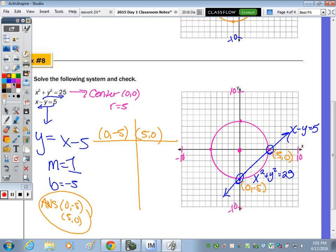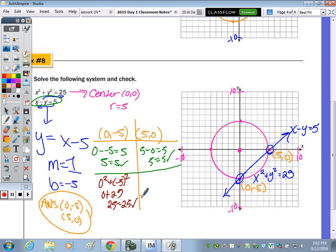And to check, you have to plug into both. So here's the check for the linear equation. x minus y equals 5. So does 0 minus a negative 5 equal 5? Yes. Does x minus y equals 5? Yes. Then you have to check in the quadratic. So is x squared plus y squared 25? 0 squared plus negative 5 squared is 0 plus 25, which is 25. That checks. Is 5 squared plus 0 squared equal to 25? 25 plus 0 again is 25. That checks.